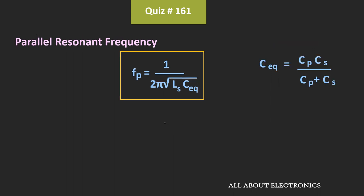Similarly, using this expression, we can find the value of the parallel resonant frequency. Here, the C equivalent is the parallel combination of the series as well as the parallel capacitance. The equivalent value of the capacitance is equal to 10 pF times 10 pF divided by 20 pF, that is equal to 5 pF.